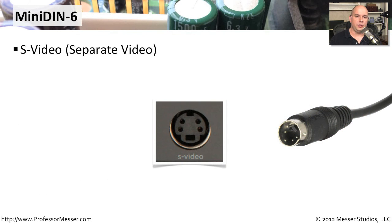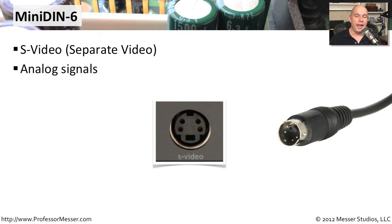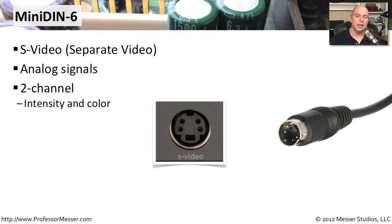A video type that uses a mini DIN 6 connector is Separate Video, abbreviated S-Video. It's an analog video type not commonly used these days, but you'll see it on legacy devices. It has two channels — one for intensity and one for color — and is usually used for lower resolution and lower definition pictures, providing a single cable just for video.